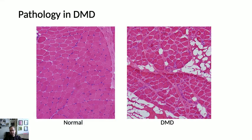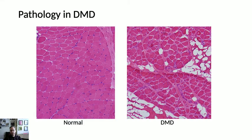In DMD, as a result of dystrophin deficiency and the shear forces on the membrane, there are repetitive rounds of fiber degeneration and regeneration. This degenerative and regenerative process is consistently ongoing, which is why patients have elevated indicators of muscle damage. Over time, the muscle fibers don't regenerate appropriately and there's an increased amount of fibrous and fatty tissue between the muscle fibers, so the muscle gets progressively less healthy with fewer contractile elements.